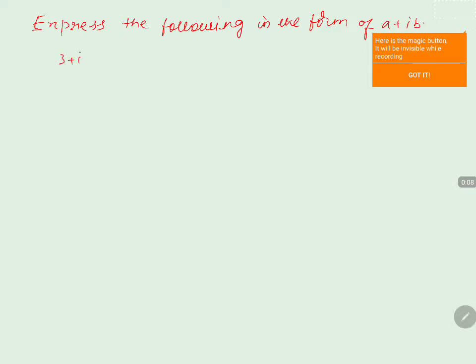Express the following in the form of a plus ib. The question is 3 plus i into root 5, into 3 minus i into root 5, divided by the denominator root 3 plus root 2 into i, minus root 3 minus root 2 into i.